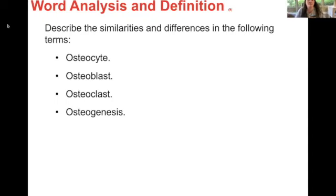Describe the similarities and differences in the following terms — they all have 'osteo' as the common root, so differences come down to the suffix. Osteocyte: -cyte means cell, so that's a bone cell. Osteoblast is a bone-forming cell. Osteoclast is a bone-removing cell. And osteogenesis is the process of creating new bone tissue.